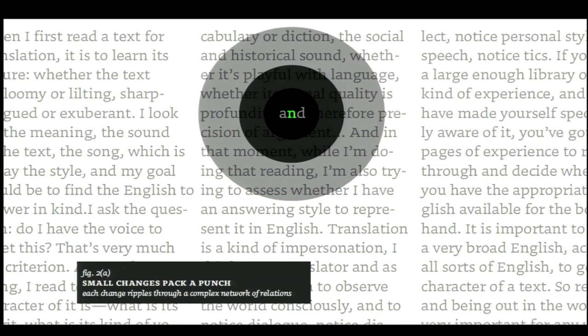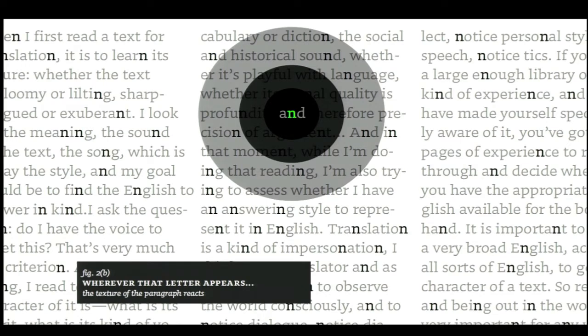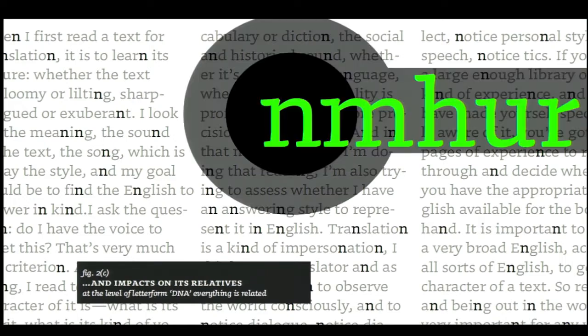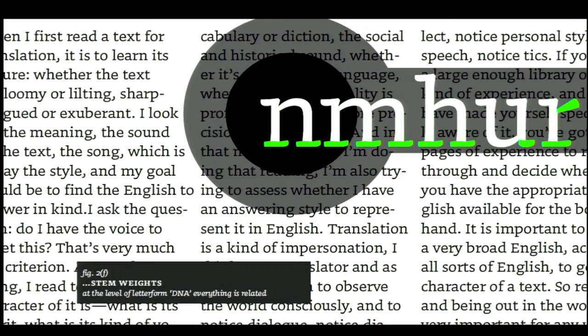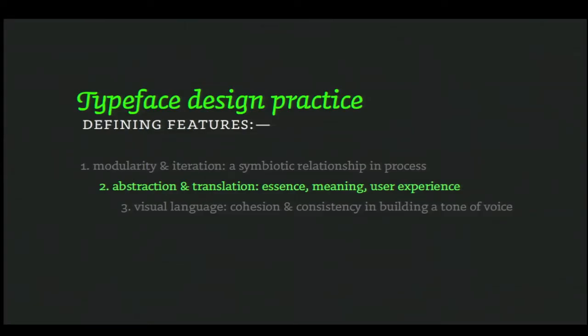If you as a type designer want to make a change to your N, that changes all the N's in the paragraph and changes the overall colour and texture of the type. But it also changes anything that has a relationship with that N — the most obvious ones being things like the M, H, U, and R. So if you change the top serif of the N, anything that has a top serif will also change, as will arches, stem weights, and so on. All the letters in a typeface have an interrelated complexity in their relationships with all the other letters — it's systems thinking to a higher degree.